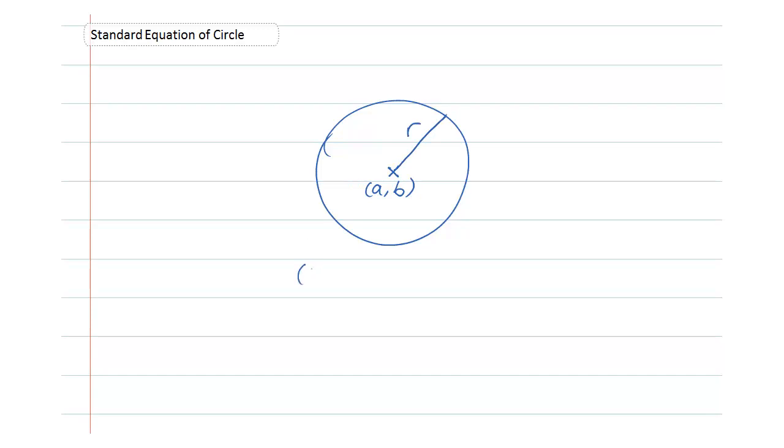So the standard equation of a circle is given by (x - a)² + (y - b)² = r².